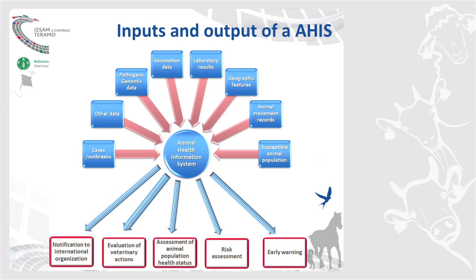These are the main inputs of the animal health information system. As you can see, there are many different things. Some of them — animal movements, data on susceptible animals — are coming from the identification registration system. Some others are coming from laboratory systems or veterinary action data on the animal health information system.